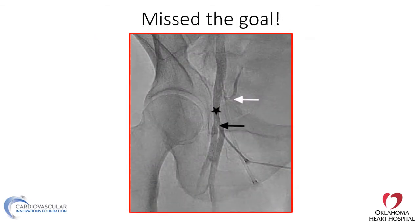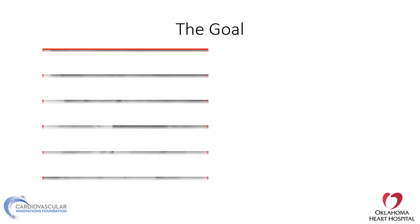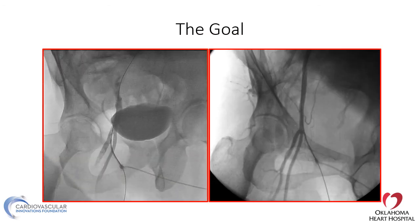Ideally, we want to get the access above the bifurcation of the femoral artery. Here, even though the sheath is in the middle of the head of the femur, you can see it did go in at the bifurcation. The goal is to have access above the bifurcation in the common femoral artery and still below the most inferior border of the inferior epigastric artery. This can be achieved with ultrasound guidance much better than with fluoroscopic guidance.